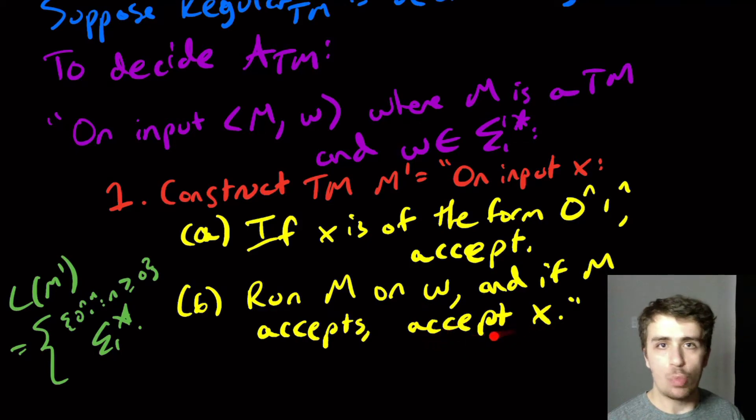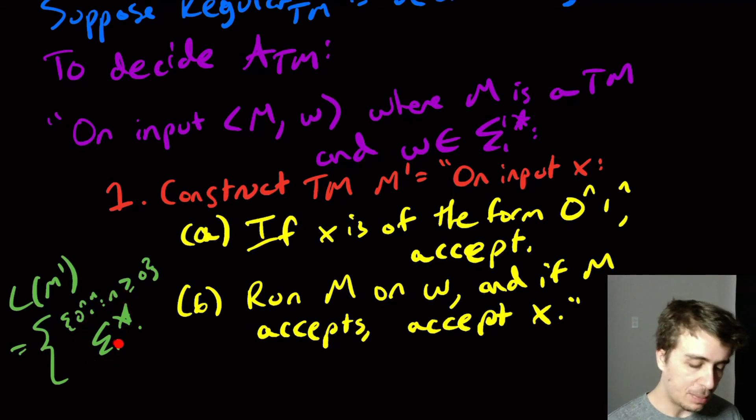Because if M accepts W, then that means that no matter what other X was fed in, it's going to be accepted too. So the language is sigma star. Notice that sigma star is regular and this one isn't.